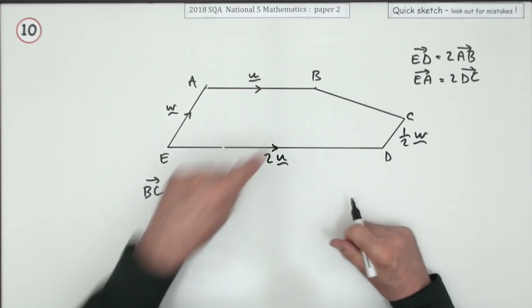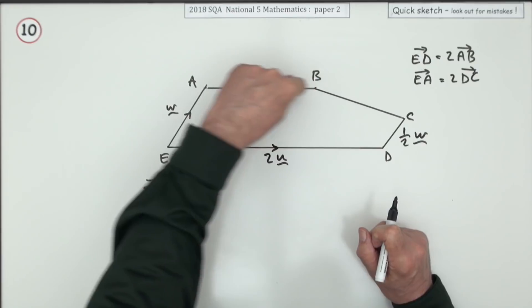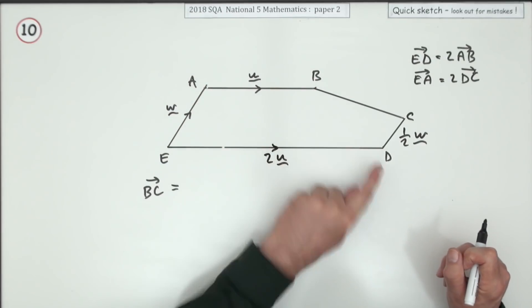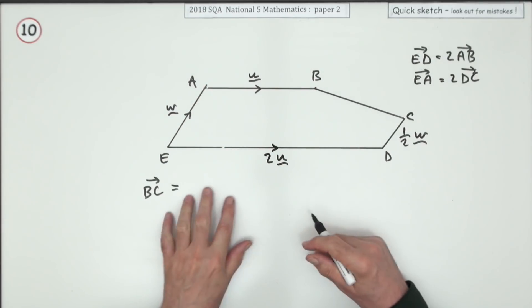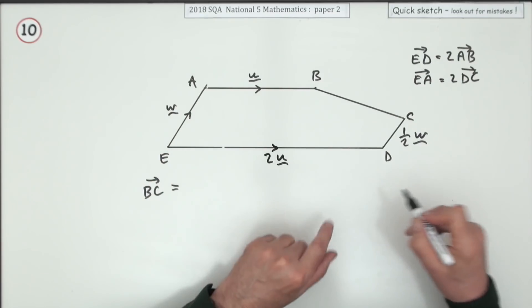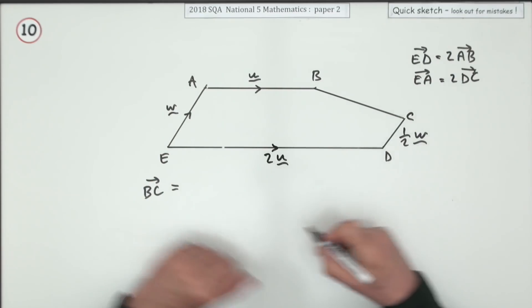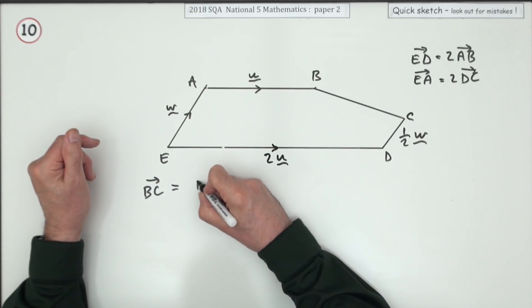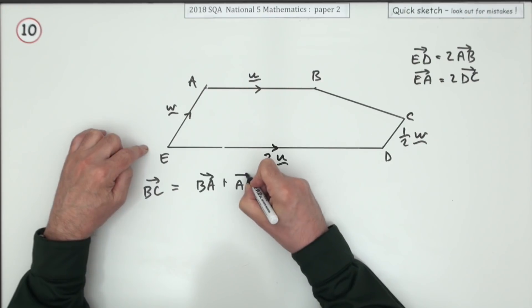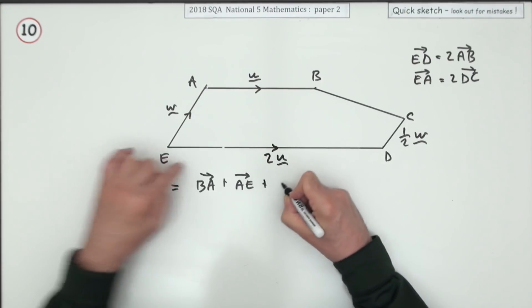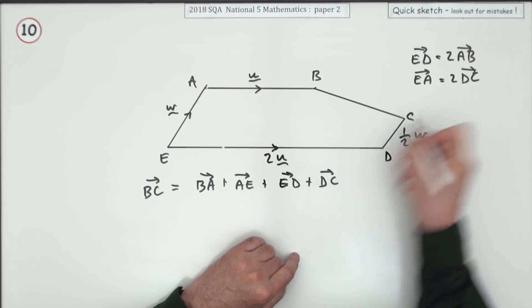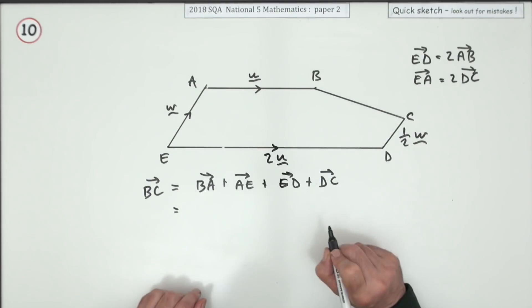Now it's just a case of going round: minus u, minus w, plus 2u, plus a half w. So I'm going from B to A, A to E, E to D, and finally D to C — and then I'll arrive at C and have found my way there.